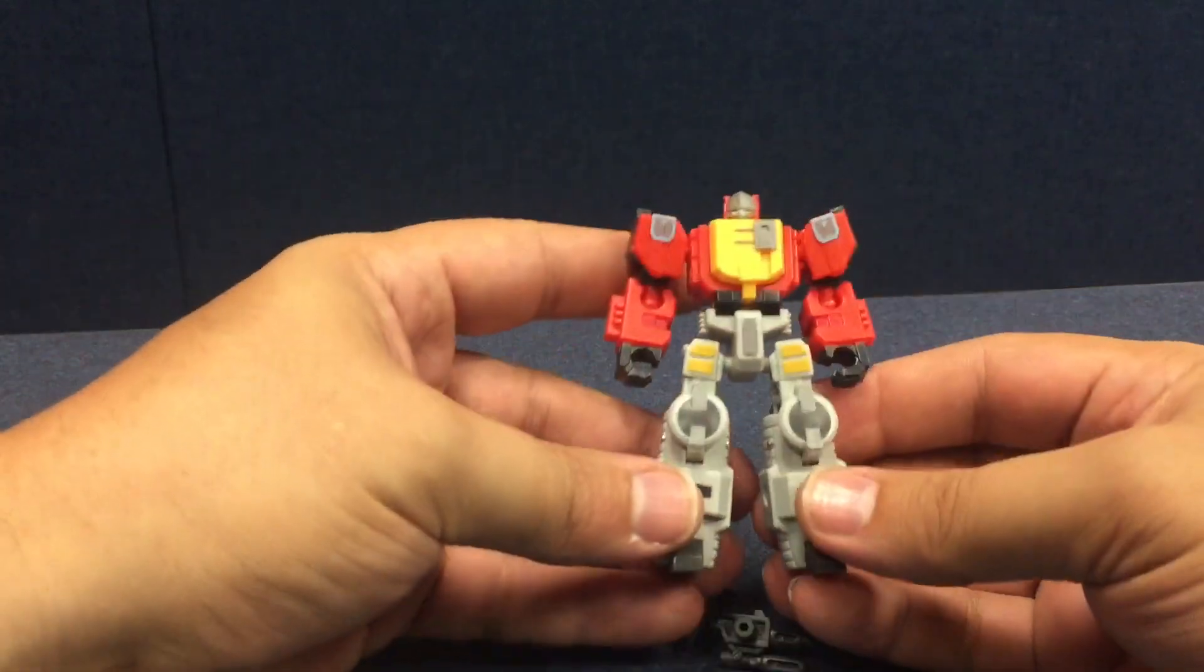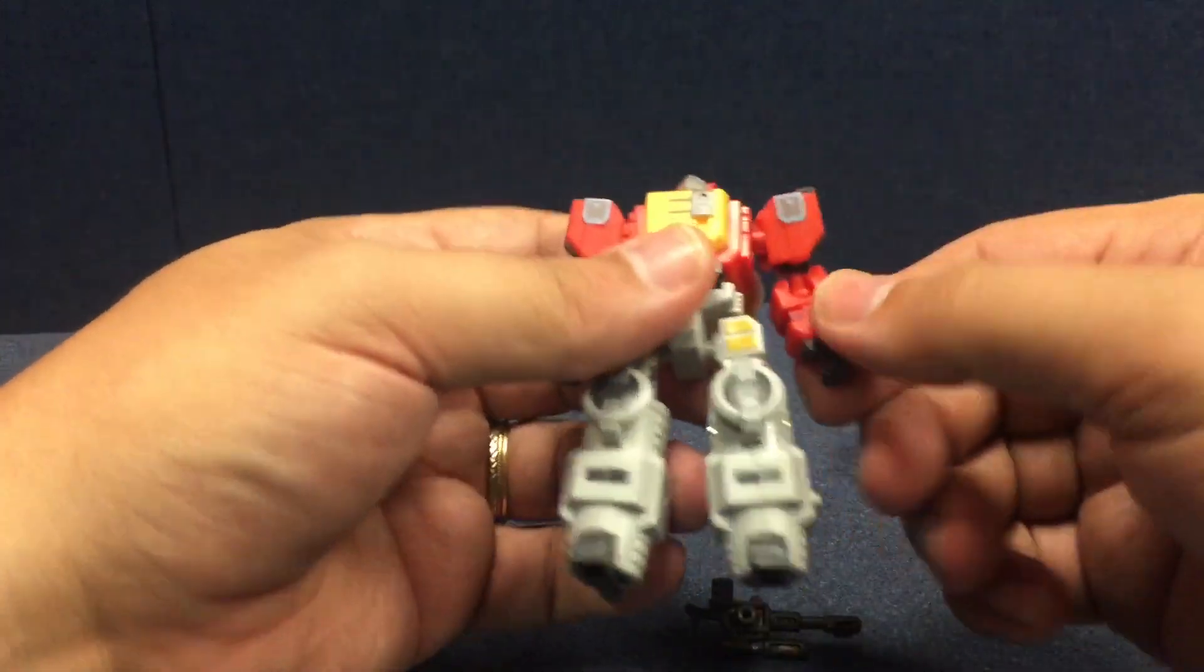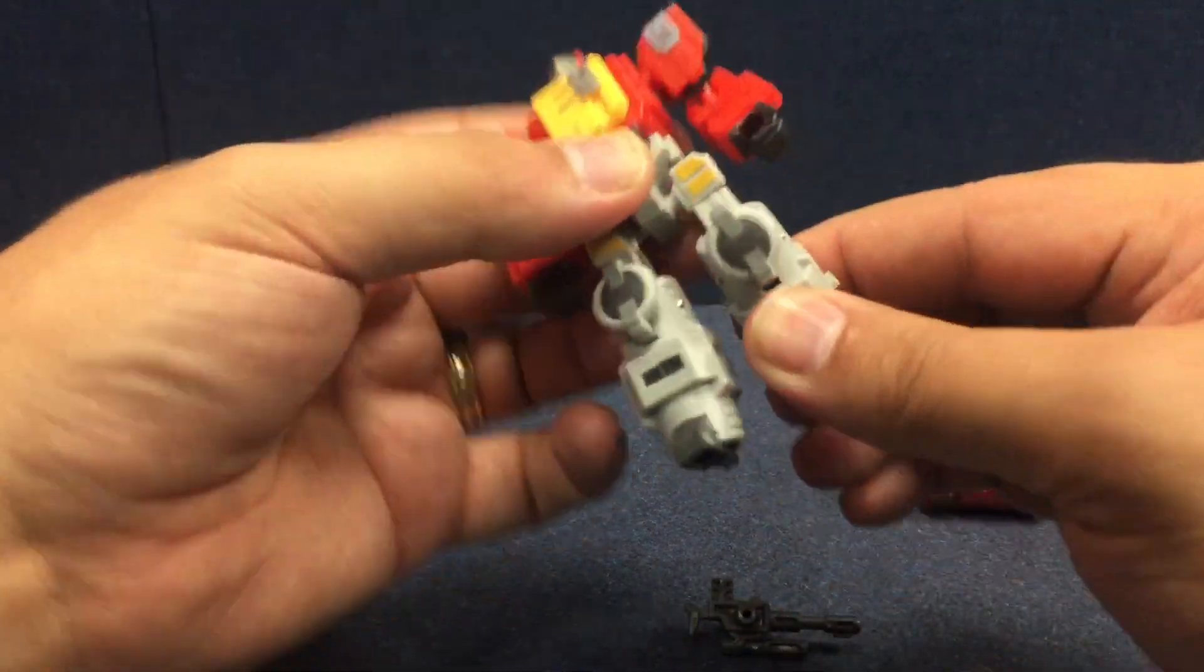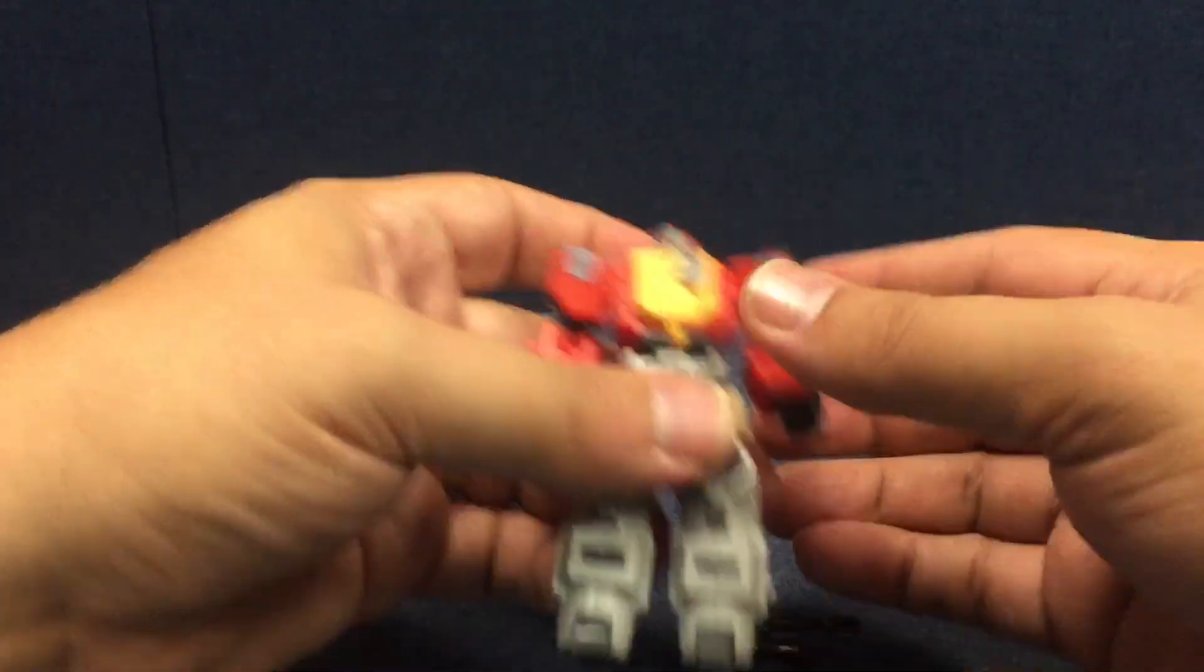Good solid plastic. He's got a ball-jointed head, ball-jointed shoulders, ball-jointed elbows, no waist swivel, but ball-jointed hips. He's got a thigh swivel, hinge knees, and then a little bit of movement in the feet there for transformation.